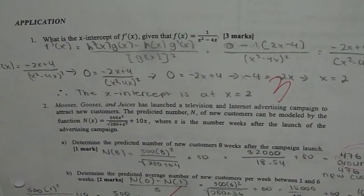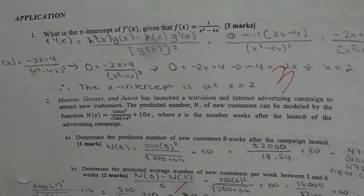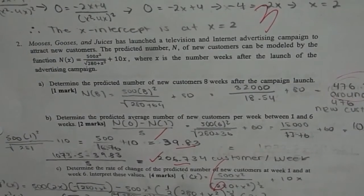What is the x intercept for the function where the function is given to you as 1 over x square minus 4 x and then we have an application question which you can copy.